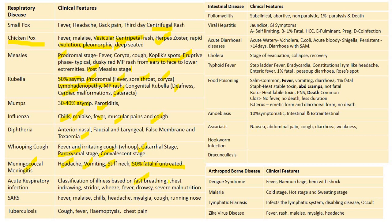ARI classification of illness is based on fast breathing and chest indrawing, depending upon the age, and also stridor, wheeze, fever, drowsiness, and severe malnutrition categorize into severe disease. SARS is similar to influenza: fever, malaise, chills, headache, myalgia, cough, and running nose. Tuberculosis: cough, fever, and chest pain are the cardinal symptoms.